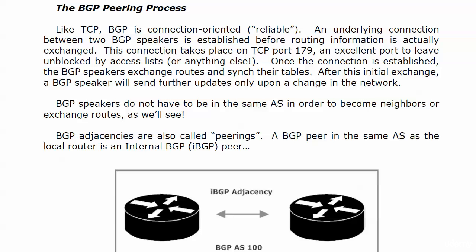BGP speakers sync their tables, and after that initial exchange, a BGP speaker sends further updates only when there is an actual change in the network. BGP speakers do not have to be in the same autonomous system in order to become neighbors or exchange routes. We have two different kinds of peerings, and this is what you've got to watch.